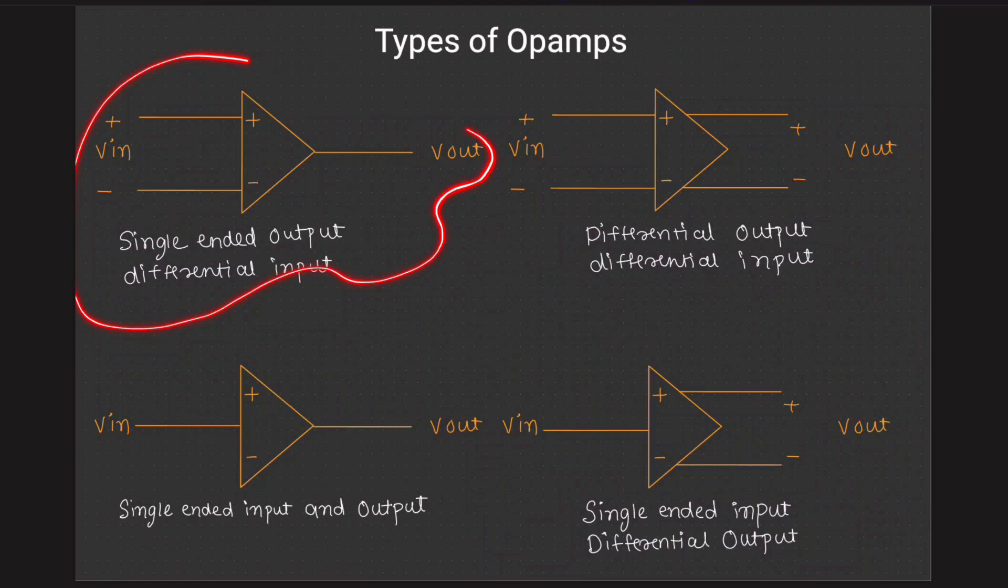This is widely used op-amp configuration or types of op-amp. We mainly use this type of op-amp and the second is differential output and differential input. We have differential inputs here and we get differential output.